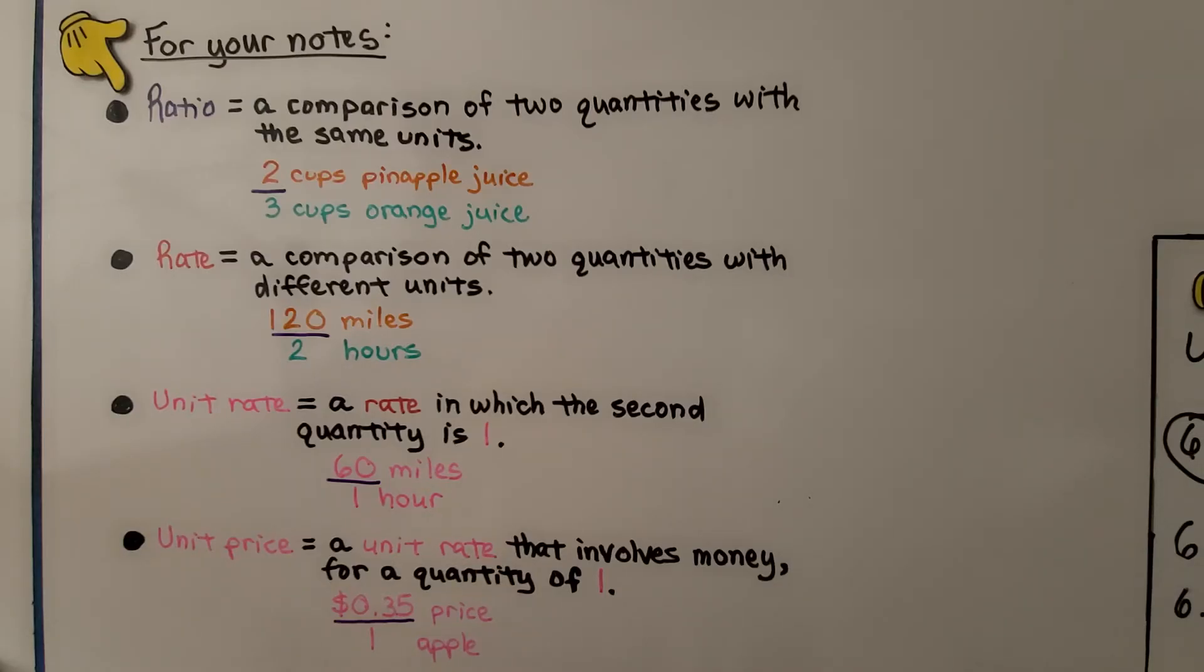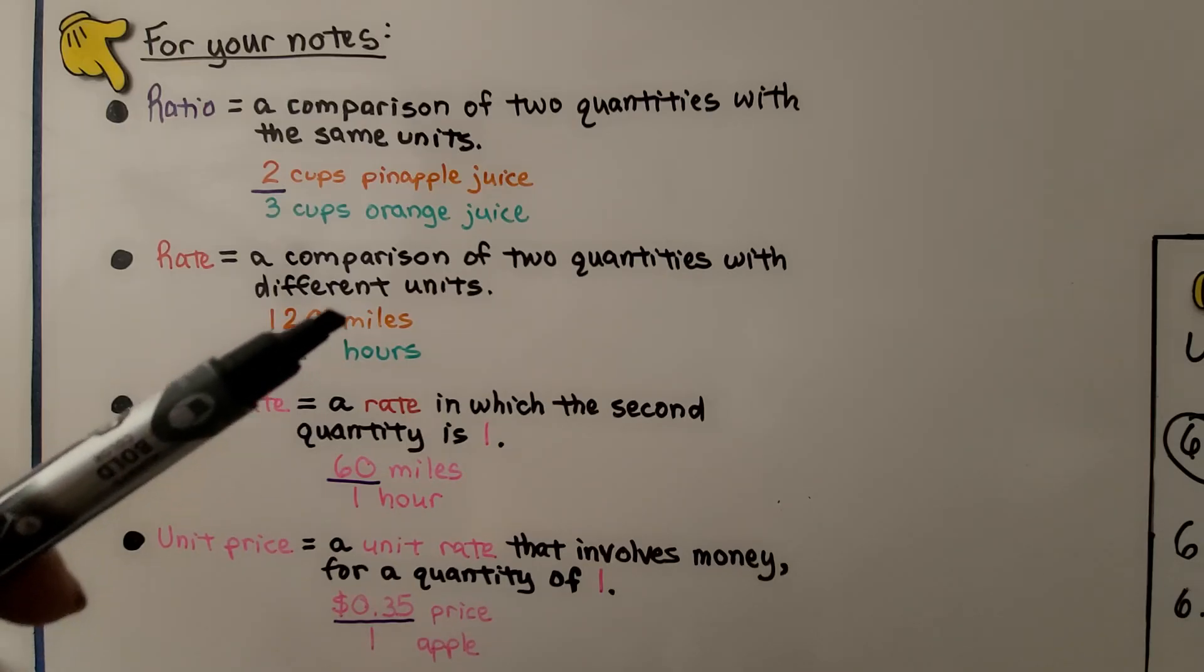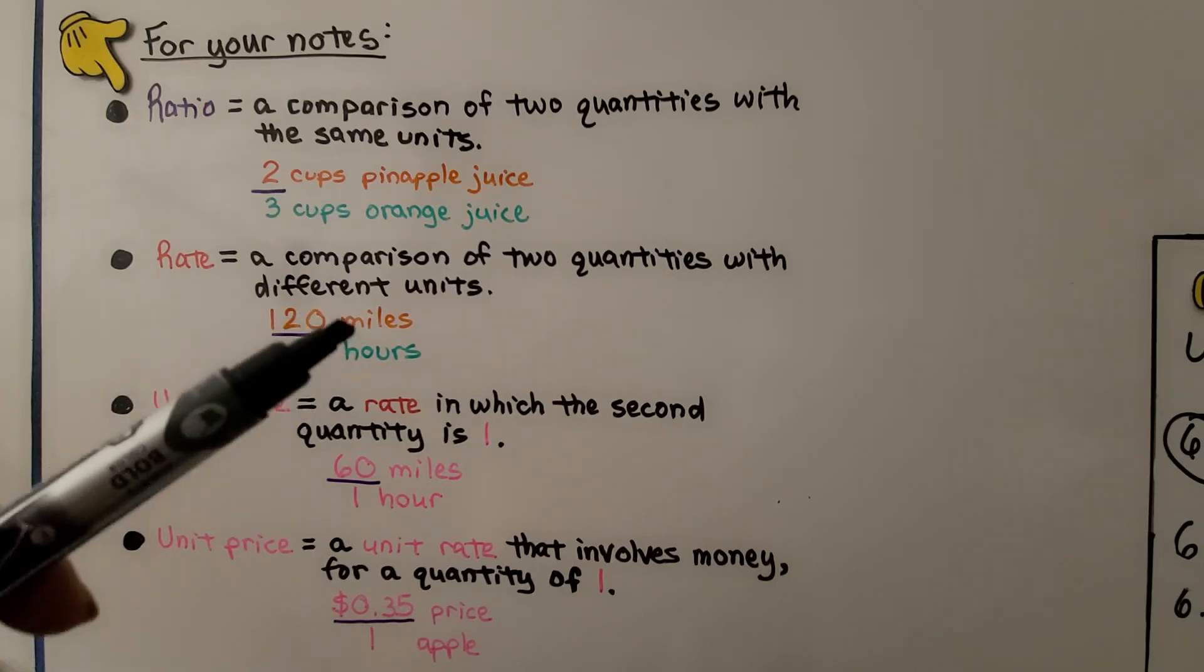So for your notes, a ratio is a comparison of two quantities with the same units. So if we're comparing cups of pineapple juice to cups of orange juice, that would be a ratio. A rate is a comparison of two quantities with different units. 120 miles to two hours. So miles and hours are different units.